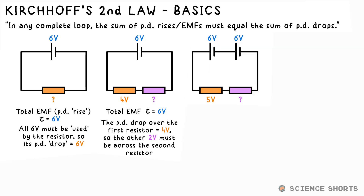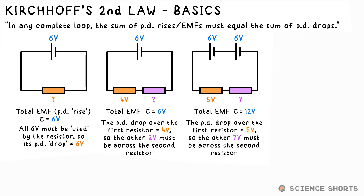Next let's add another 6 volt battery in series and say that the PD across the first resistor is 5 volts. What's it going to be for the second resistor now? Well the total PD rise or EMF is 12 volts — 6 plus 6 — so the second resistor must be taking up 7 volts of that 12 volts.